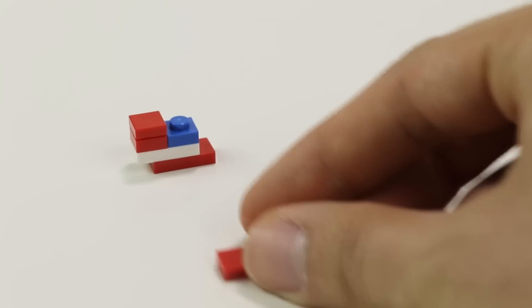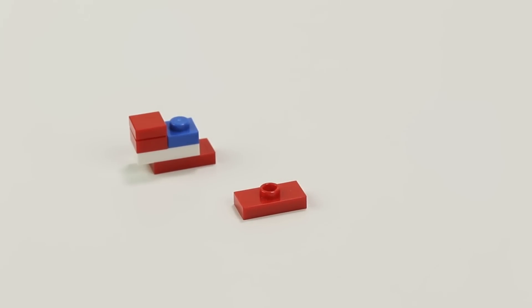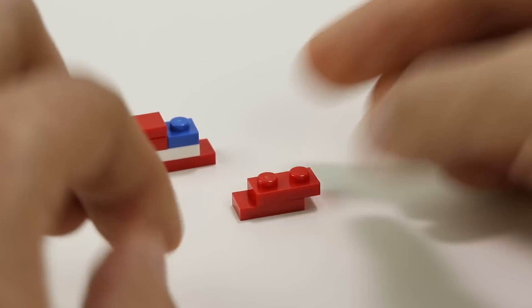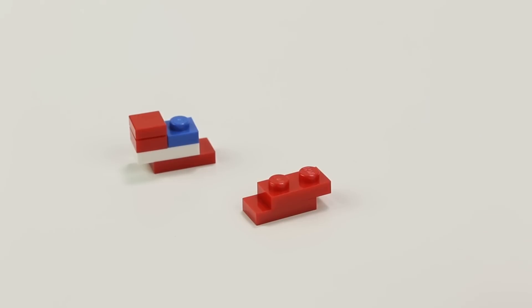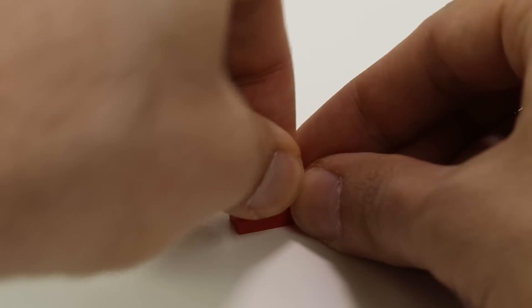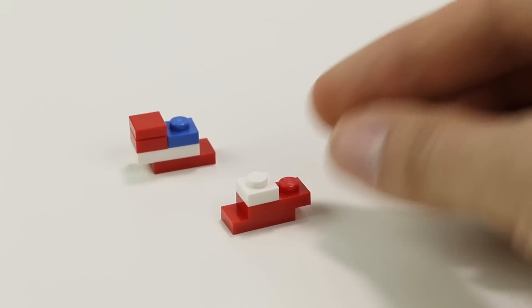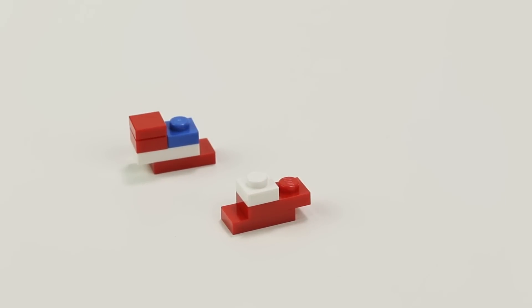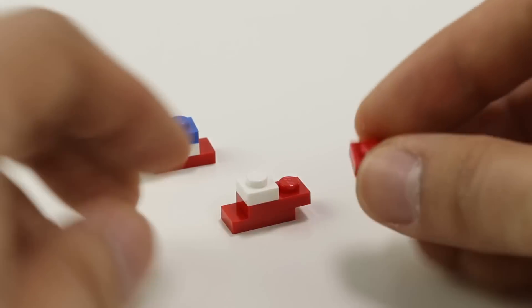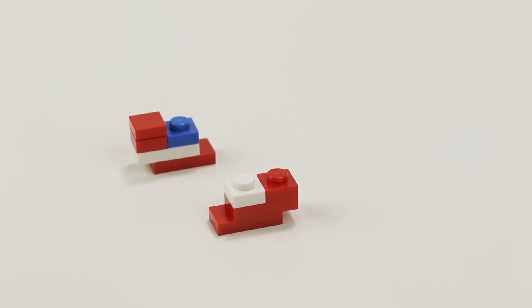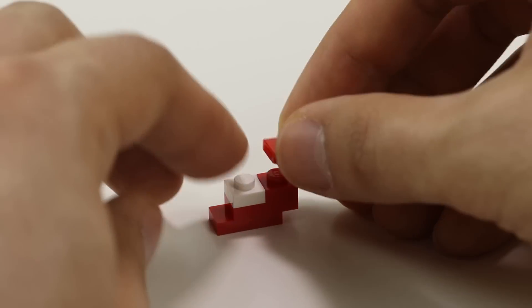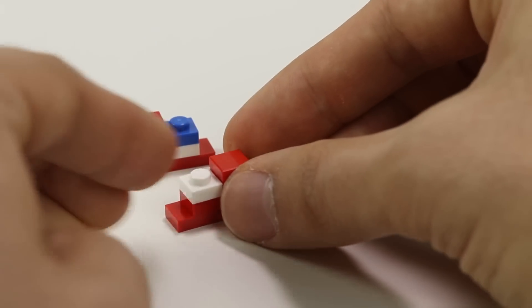For the other foot, we're going to start with a 1x2 red offset plate. We're going to add a 1x2 red plate on top of that. Then we're going to add a 1x1 white plate. The white is there to approximate Sonic's socks and the stripes of his shoes. Then we're going to add another 1x1 red plate and another 1x1 red tile. Those are our two legs there.